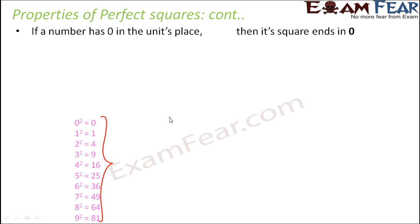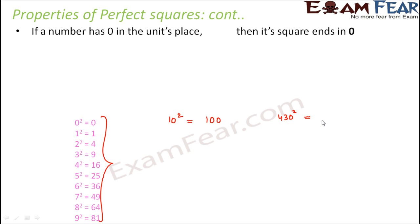It doesn't matter how big the number is. For example, 10 squared is 100, so any number which ends with zero, its square will also end in zero. Because zero squared is zero — the units place decides what would be the units place in the final result. Similarly, if you square 430, even if you do not know the exact value, its square will definitely end in zero. If you actually calculate, the value is 184,900 — and you see it ends in zero.